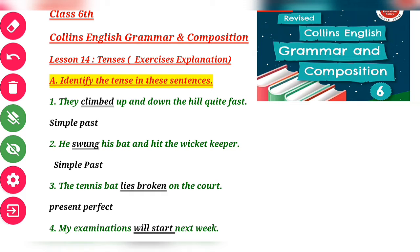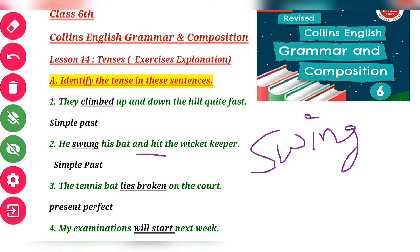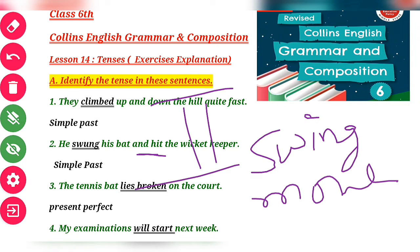Second sentence: 'He swung his bat and hit the wicket keeper.' There are two verbs here — 'swung' and 'hit'. 'Swung' is the second form of 'swing', meaning to move. Again, the second form of the verb is being used here, so that is Simple Past.